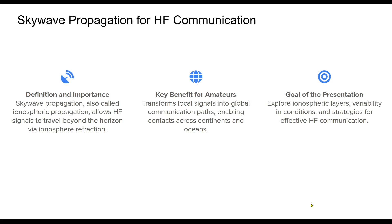Sky wave propagation is a critical phenomenon for amateur radio operators, providing the ability to communicate over vast distances by utilizing the ionosphere. Without this, HF communication would be limited to local areas or ground wave paths. We will explain the basics of this phenomenon, dive deep into ionospheric layers, and discuss how conditions vary and provide strategies to optimize HF communication.